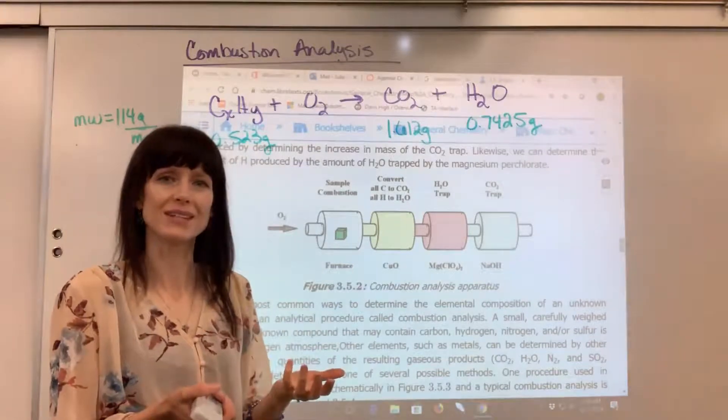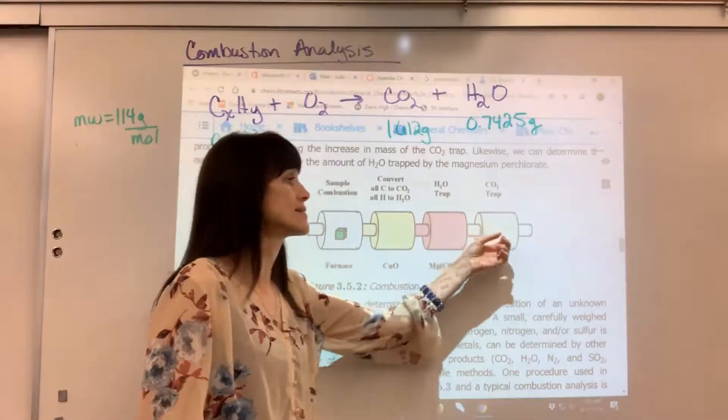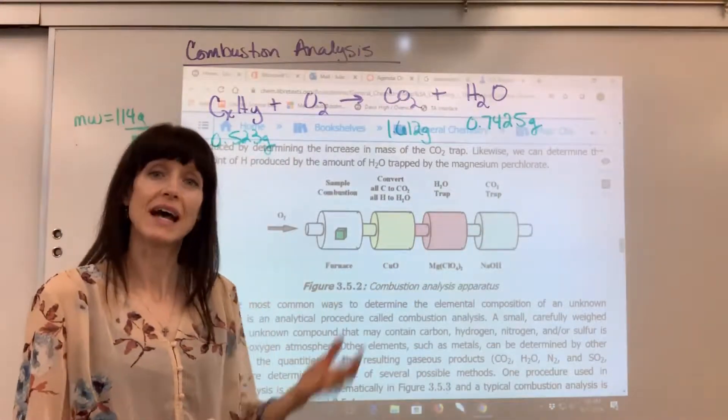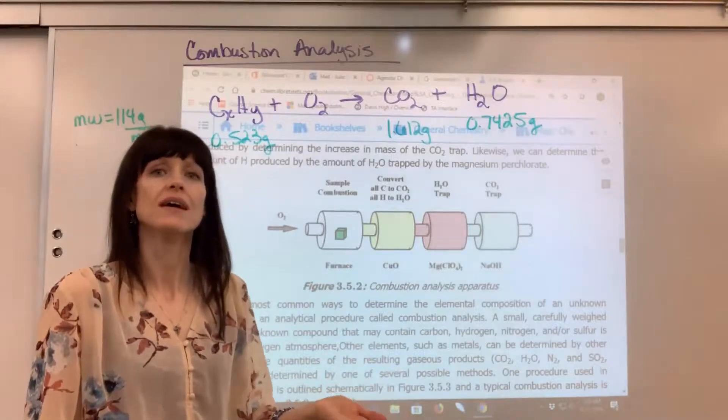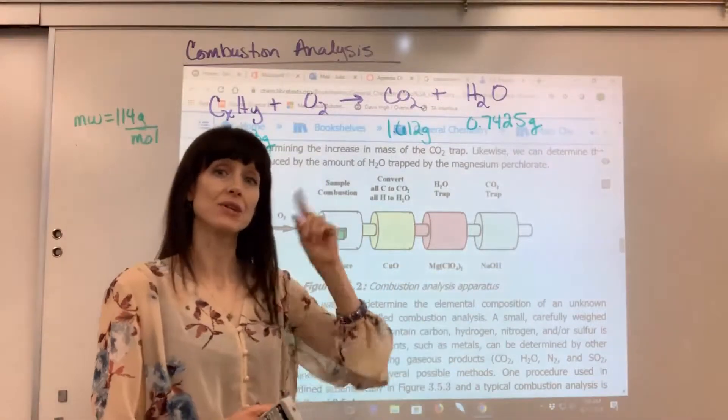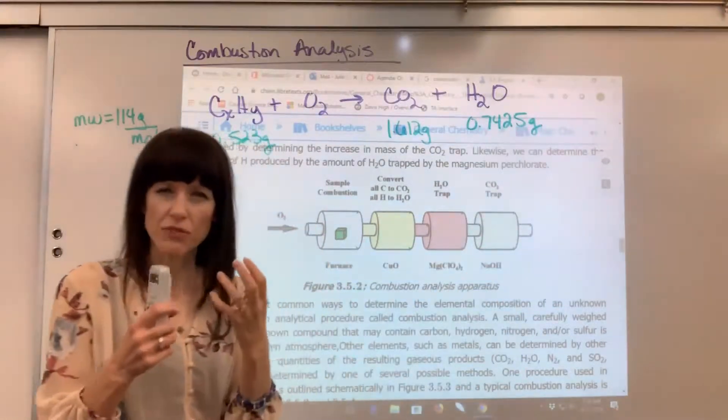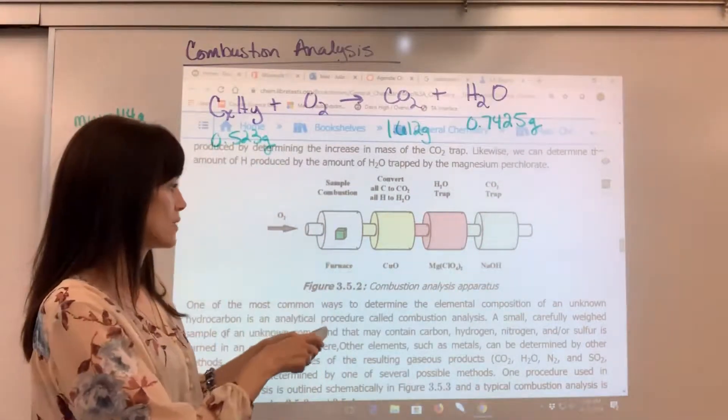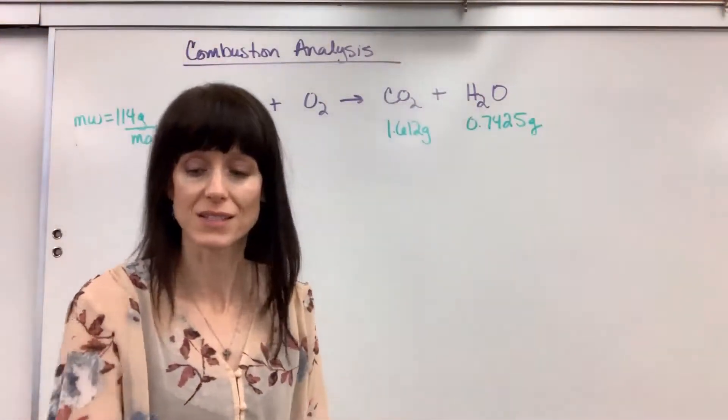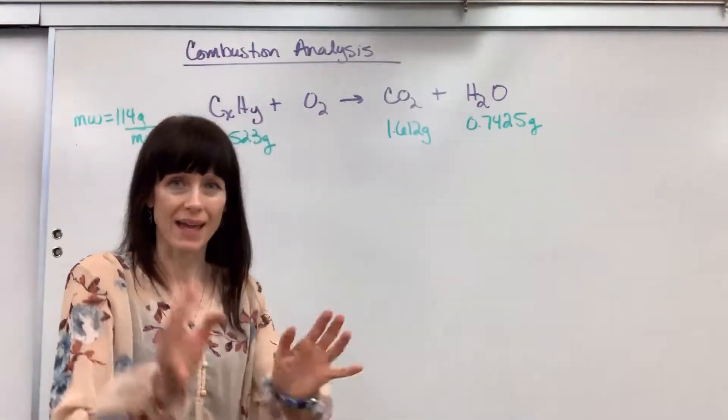So what scientists do is they know the mass of each of those absorbents, and after the reaction is complete, they take the mass again. The increased mass is the H2O and the CO2. So there you have the combustion analysis for the experiment.